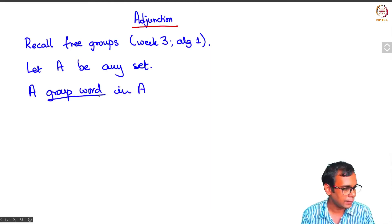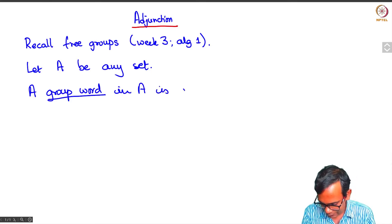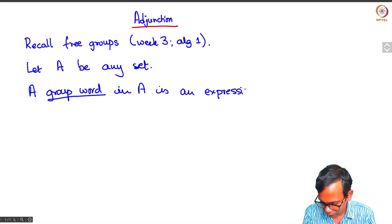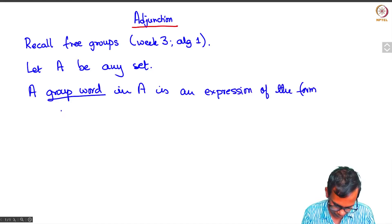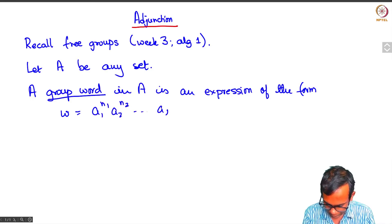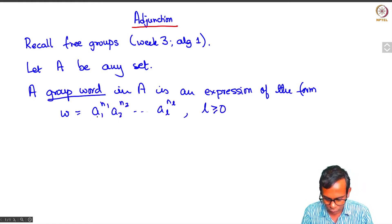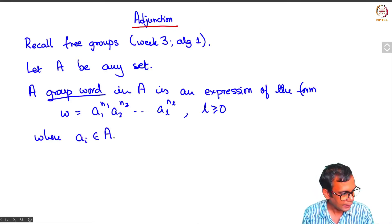So a group word in A is an expression of the form w equals a1 to the power n1, a2 to the power n2, aL to the power nL where L is any non-negative integer. I allow L to be 0 in which case I will be looking at the empty word where each ai comes from the set a and ni is an integer.